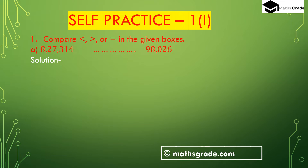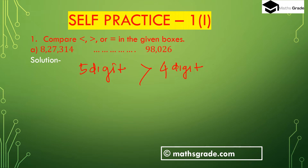Question number one: compare using less than, greater than, or equal sign in the given boxes. First, we take 8,27,314 and 98,026. We know that the number with more digits is greater. Here 8,27,314 is a five-digit number and 98,026 is a four-digit number. A five-digit number is always greater than a four-digit number. So 8,27,314 is greater than 98,026.